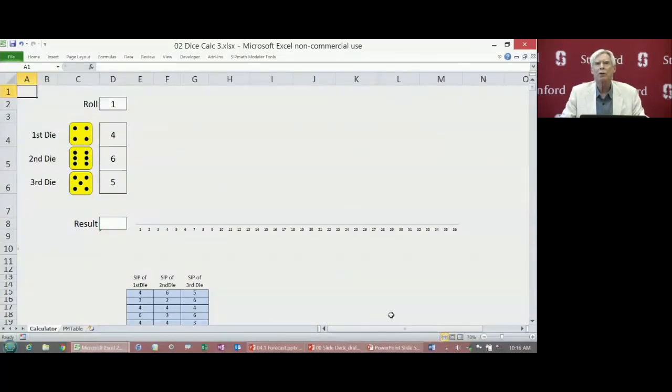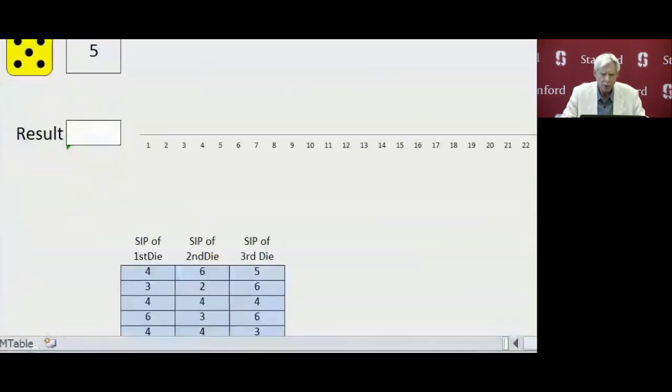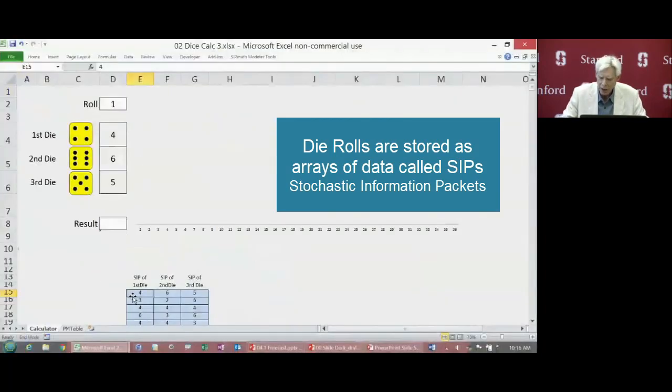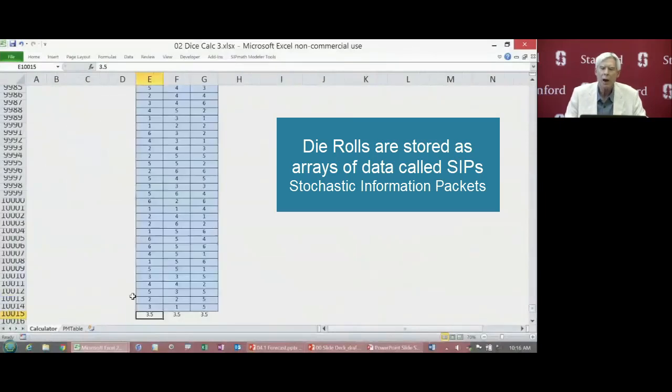We're going to represent the uncertainty of these dice as arrays of die rolls. So if I look down here, my first roll is a four, a six, and a five. The second one is a three, a two, and a six. And this goes down 10,000 times, which is 10,000 die rolls.